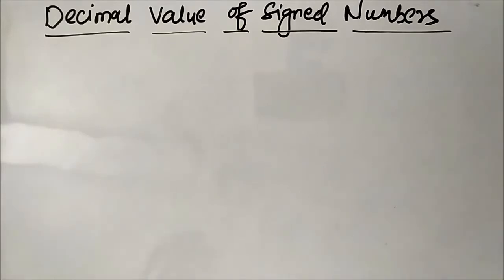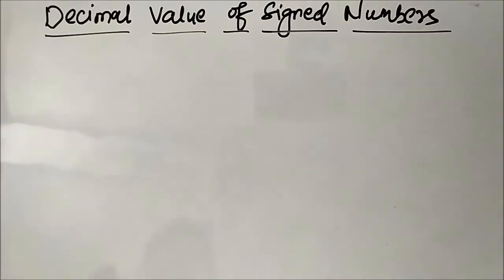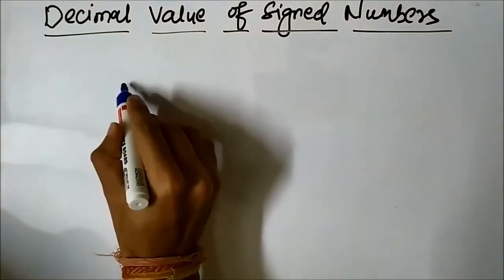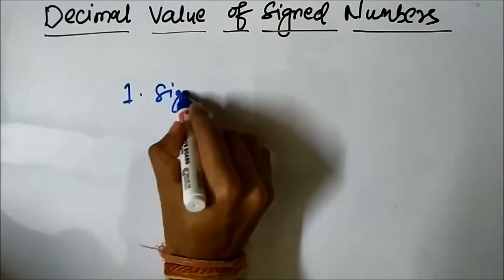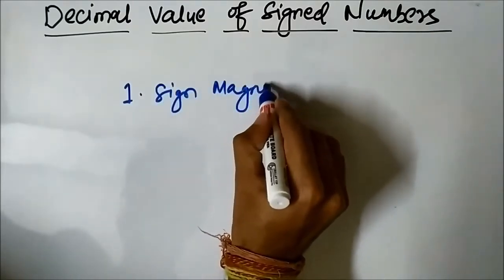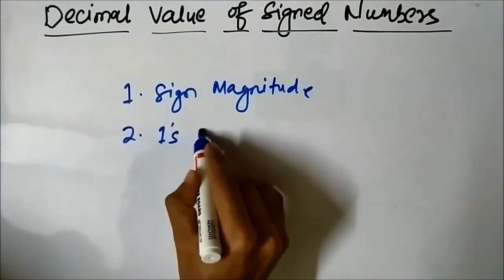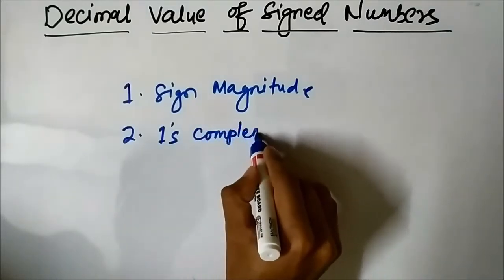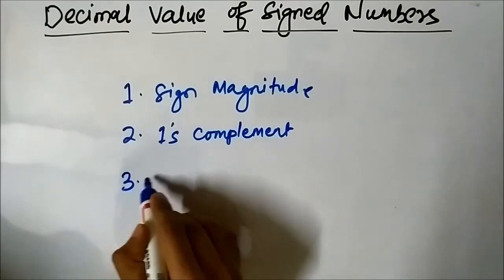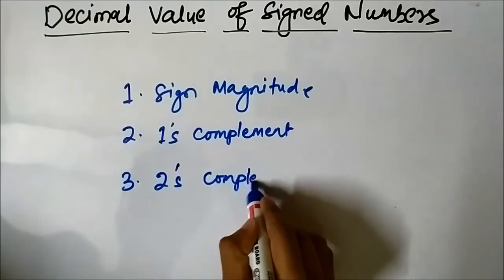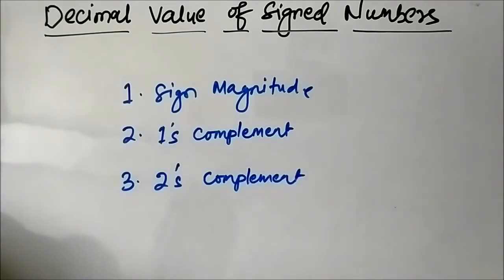In today's video we are going to do the opposite — how to determine the decimal value of a particular integer from its binary representation. We know that there are three systems used: first is sign magnitude, second is 1s complement, and third is 2s complement. These are the three systems we discussed.